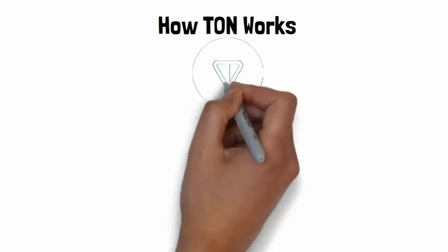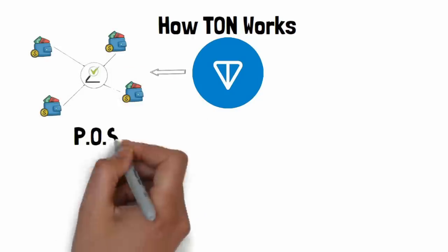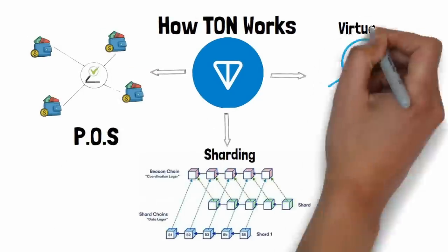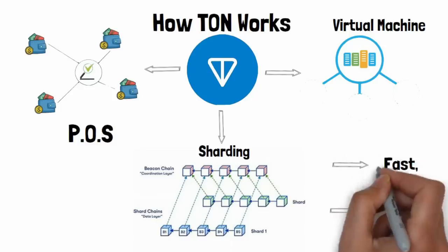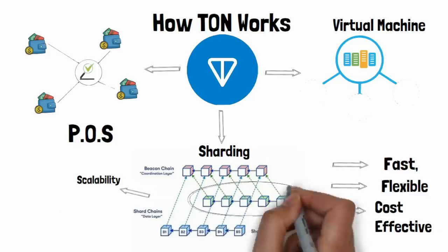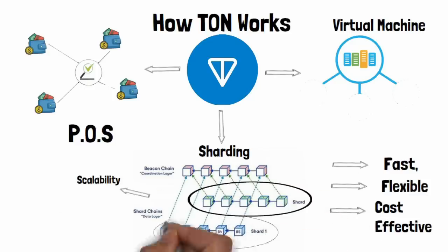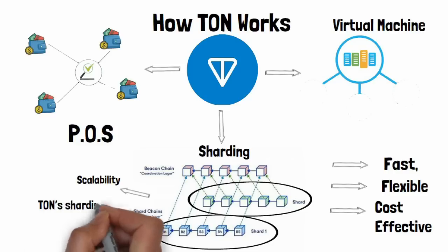Let's dive into how TON works and what sets it apart from other blockchains. TON uses a combination of proof of stake, sharding, and a virtual machine to offer a fast, flexible, and cost-effective blockchain. The network's scalability comes from sharding, where the blockchain is split into smaller pieces called shards that work independently and process transactions in parallel, increasing efficiency.